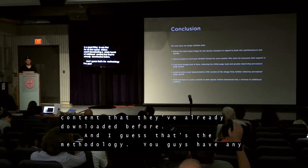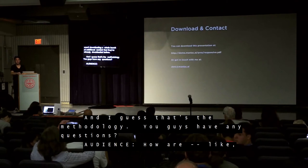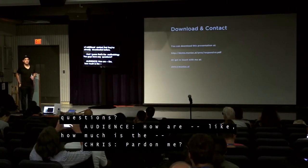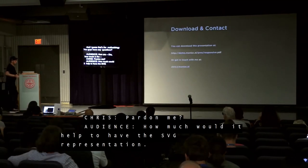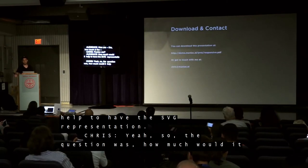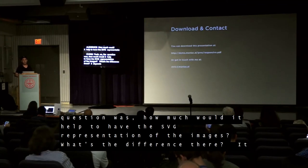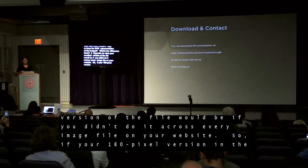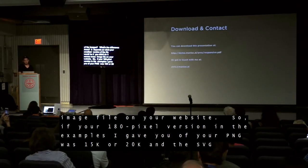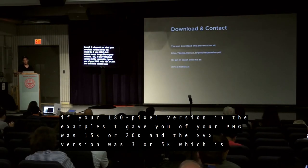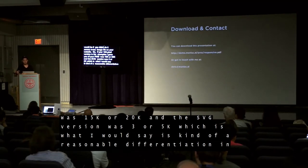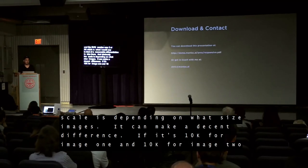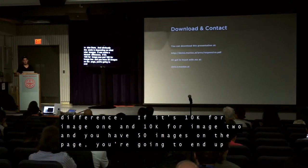How much would it help to have the SVG representations of the images? It really depends on what your smallest version of the file would be across every image on your website. If your 180-pixel PNG was 15K or 20K and the SVG version was 3 or 5K, that's a reasonable differential in size, and it scales depending on the image. If it's 10K saved per image and you've got 50 images on the page, you could end up saving a megabyte. It depends on the page layout, but wherever you can optimize there's value. And a 180-pixel image displayed at 500 or 800 pixels wide is going to look terrible anyway, so a scalable blurry version is better than giant stretched pixels for that brief split second before the actual image loads.